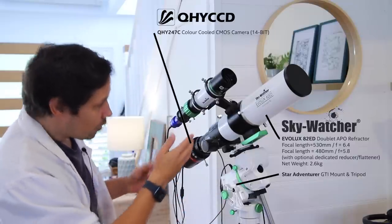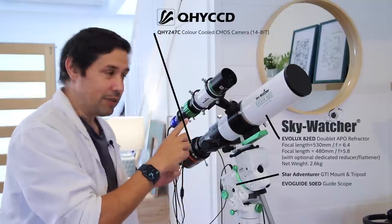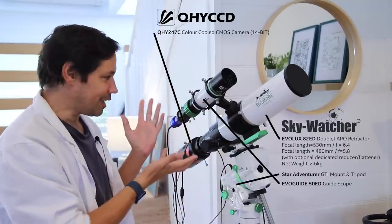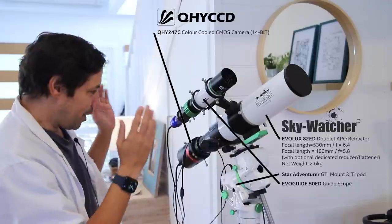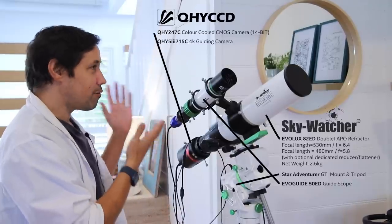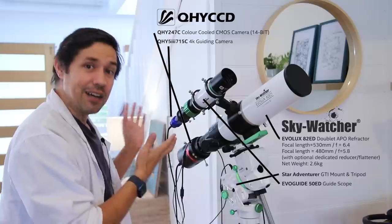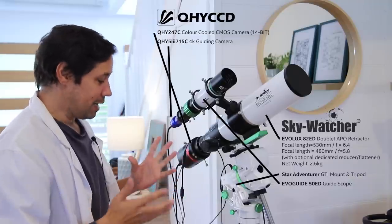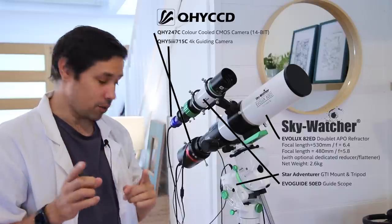I'm going to be guiding with the EvoGuide 50ED, which is honestly overkill for a guide scope. Who needs helical focusing on a guide scope? I don't know. But I am using the new QHY5III715C guide camera that QHY sent me to test. I've already done some testing, it's working great, and we're gonna go out tonight and do some more.